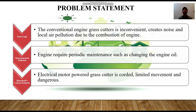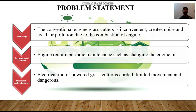Problem Statement: The first problem is fuel usage — the conventional engine grass cutter is inconvenient, creates noise, and causes local air pollution due to combustion. The second is environmental pollution — the engine requires periodic maintenance such as changing engine oil. The third is household carbon footprint — electrical motor powered grass cutters are corded, have limited movement, and are dangerous to consumers.